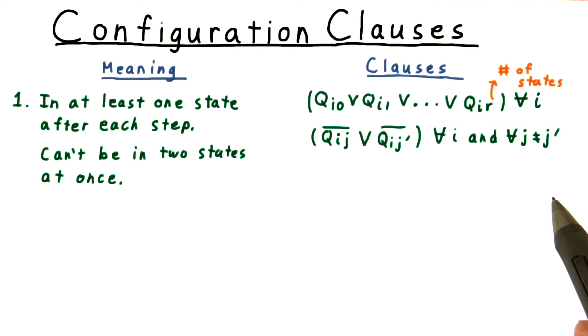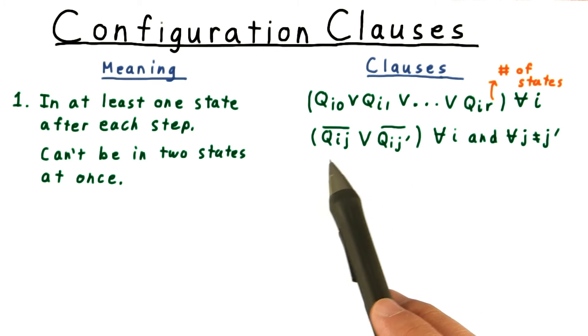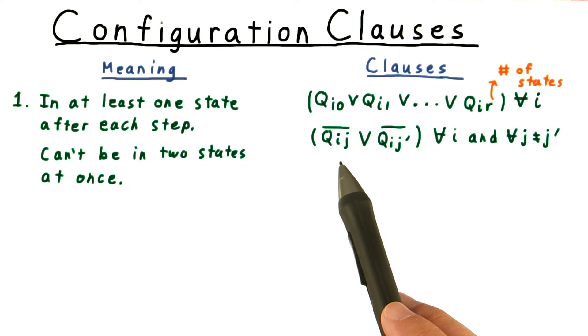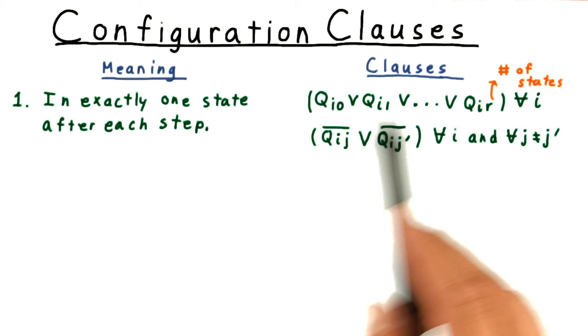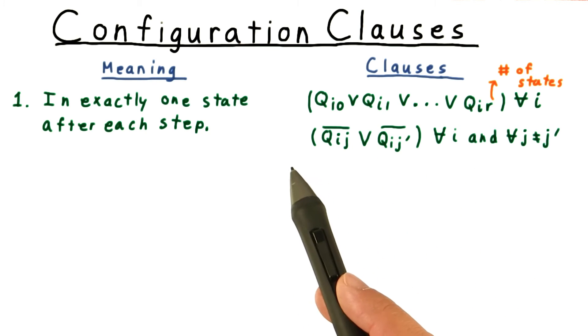The machine also can't be in two states at once, so we need to enforce that constraint as well, by saying that for every pair of state variables for a given time step, one of the two has to be false. Together, these sets of clauses enforce that the machine corresponding to a satisfying truth assignment is in exactly one state after each step.